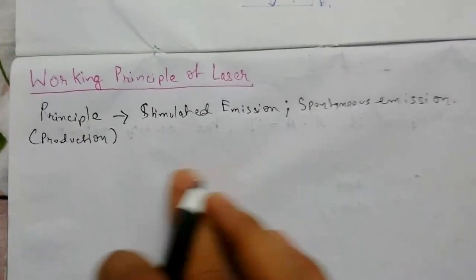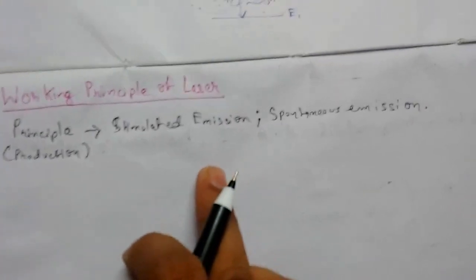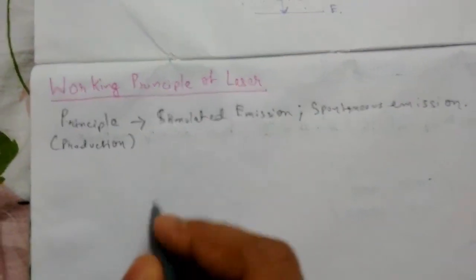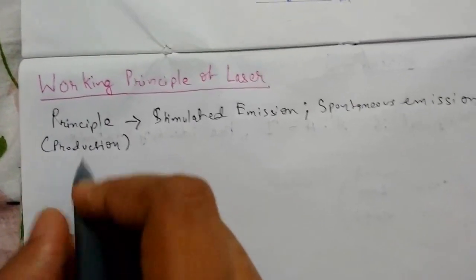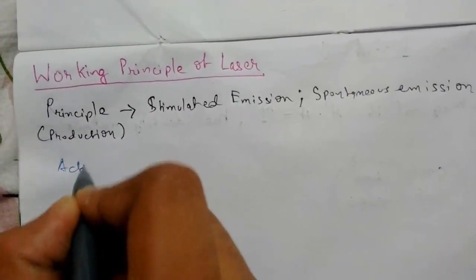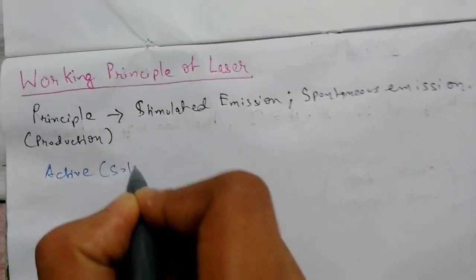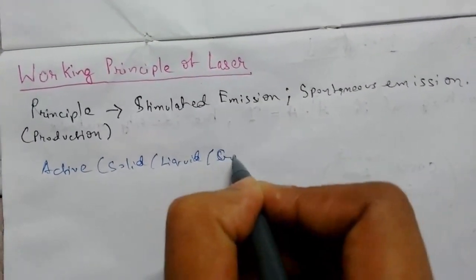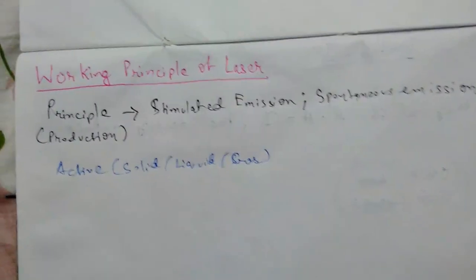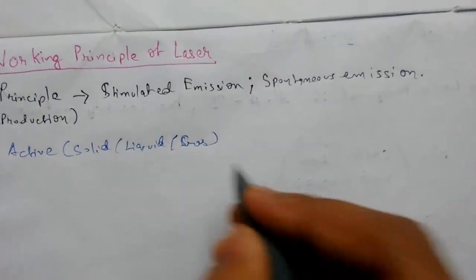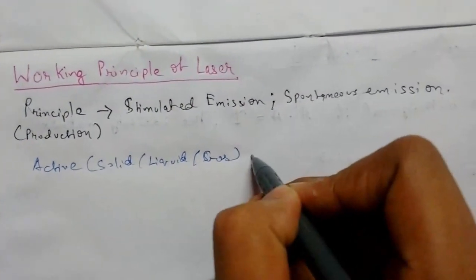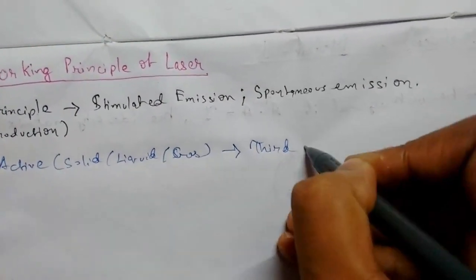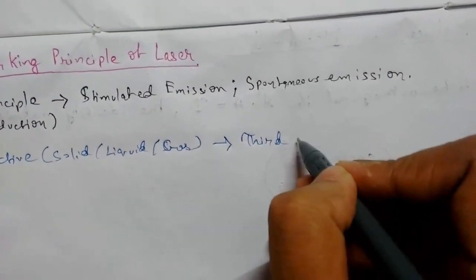First of all, in the lasing process there should be an active medium. Active medium means a state that is solid, liquid, or gas. This is the active medium which should be such that it should have at least a third state.